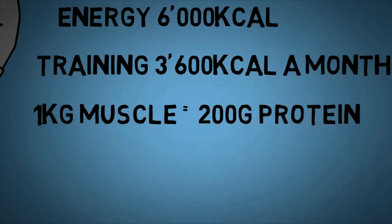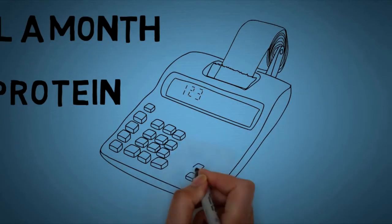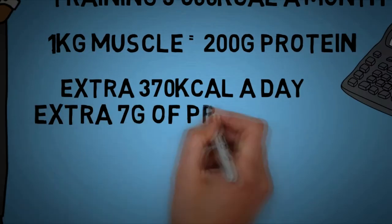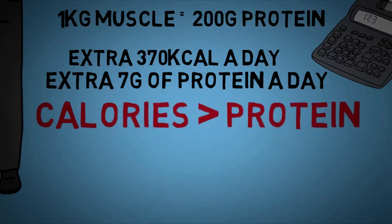Calculating this information down to one day, John needs 307 extra calories and 7 grams of extra protein. As you can see, your daily caloric intake is way more important.